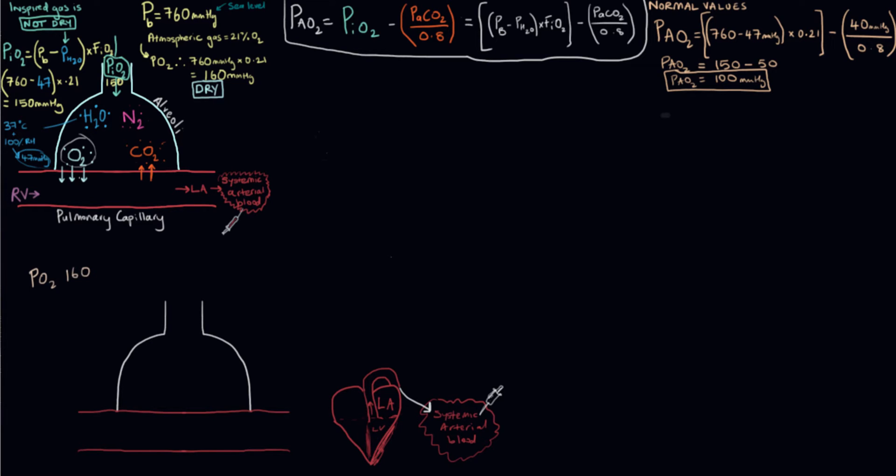When we breathe the oxygen in, it's warmed and humidified. The presence of that water vapor results in the partial pressure of oxygen being lower, so it goes down to around 150. We call that PiO2.